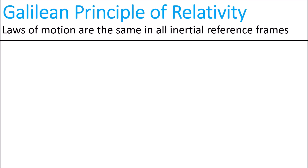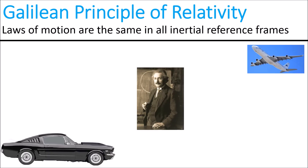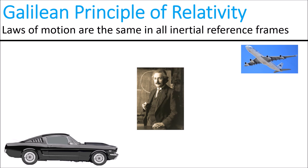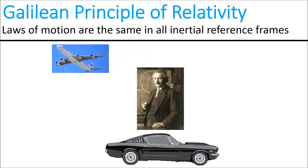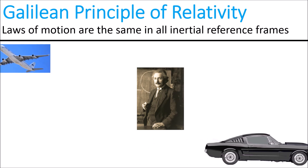Remember that in Relativity 101, we stated the principle of Galilean relativity, which means that the laws of motion are the same in all inertial reference frames. An inertial reference frame is just a non-accelerating reference frame, such as a scientist standing still on the ground, or a car or a plane traveling by at a constant speed.